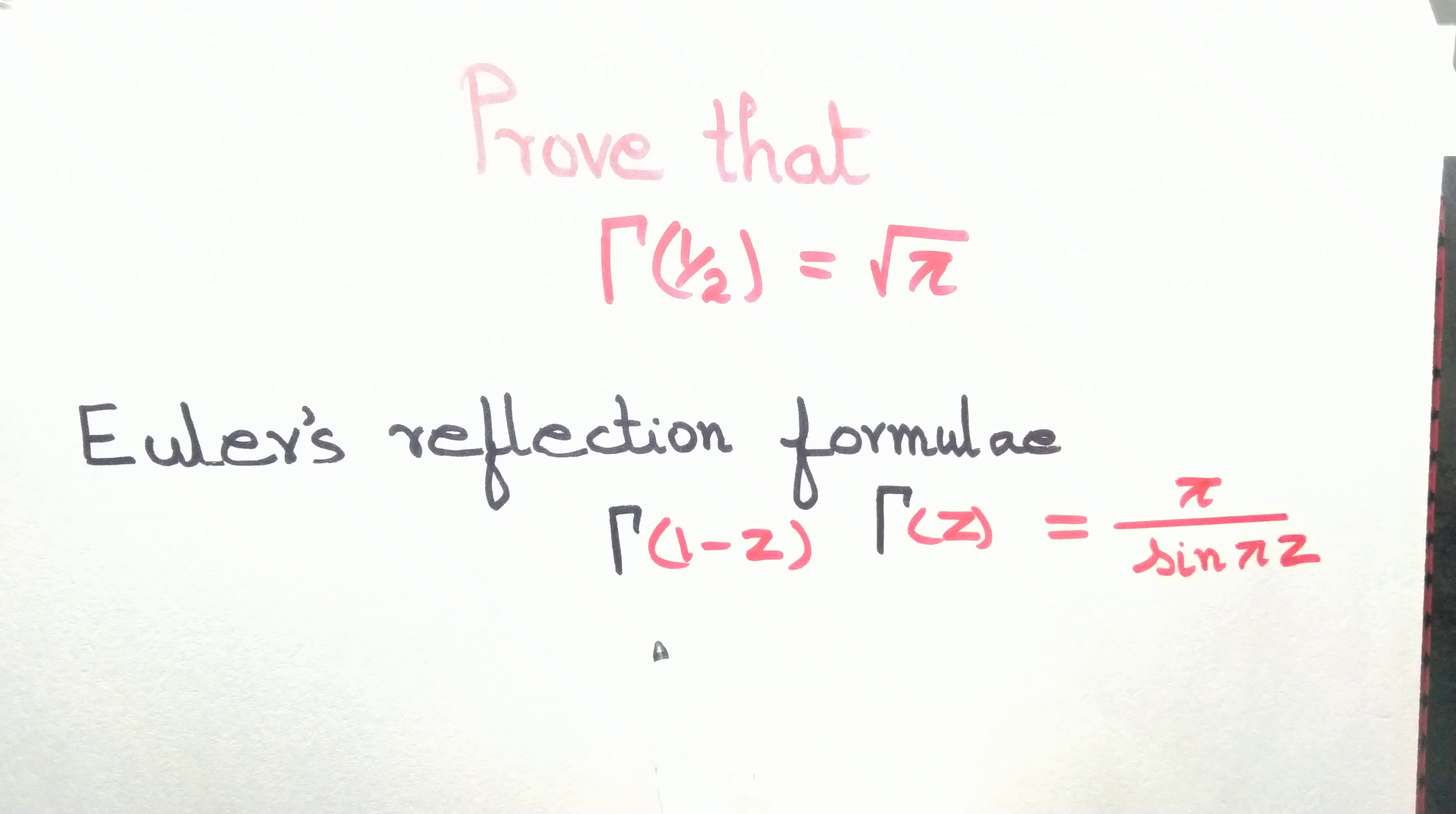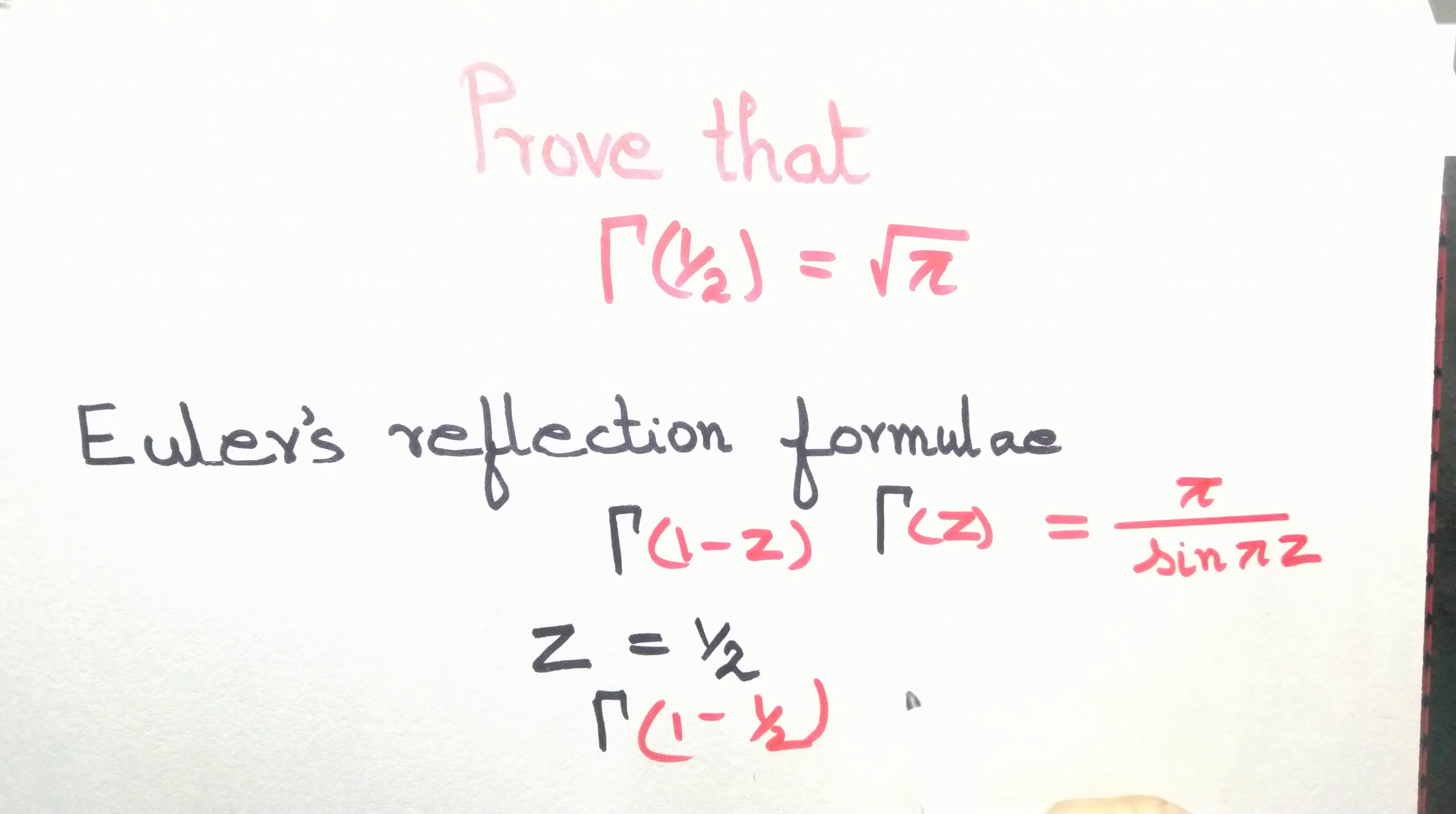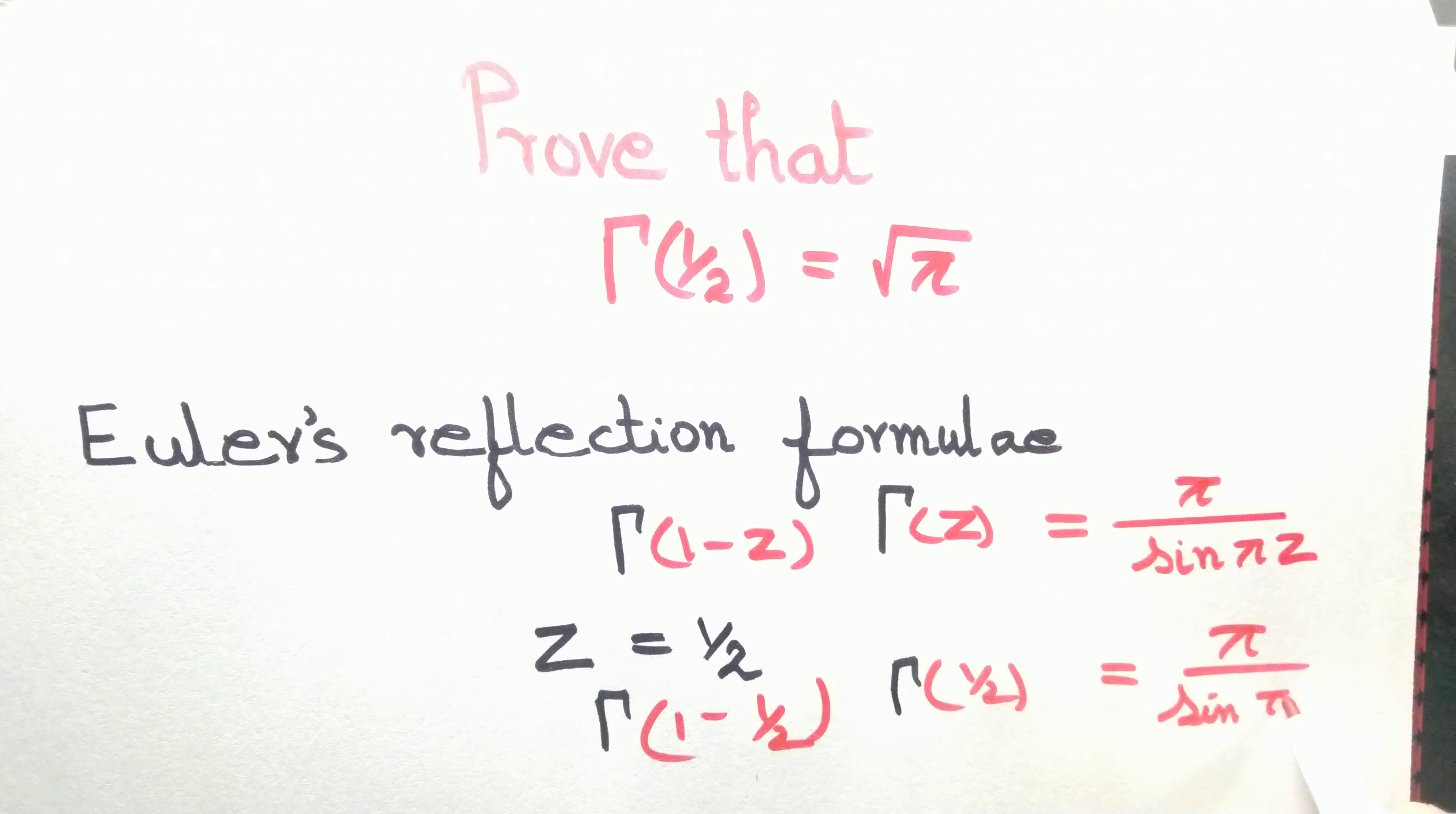Let's take z equal to half. When we substitute z equals half, we have gamma of 1 minus half times gamma of half equal to pi divided by sine of pi by 2.